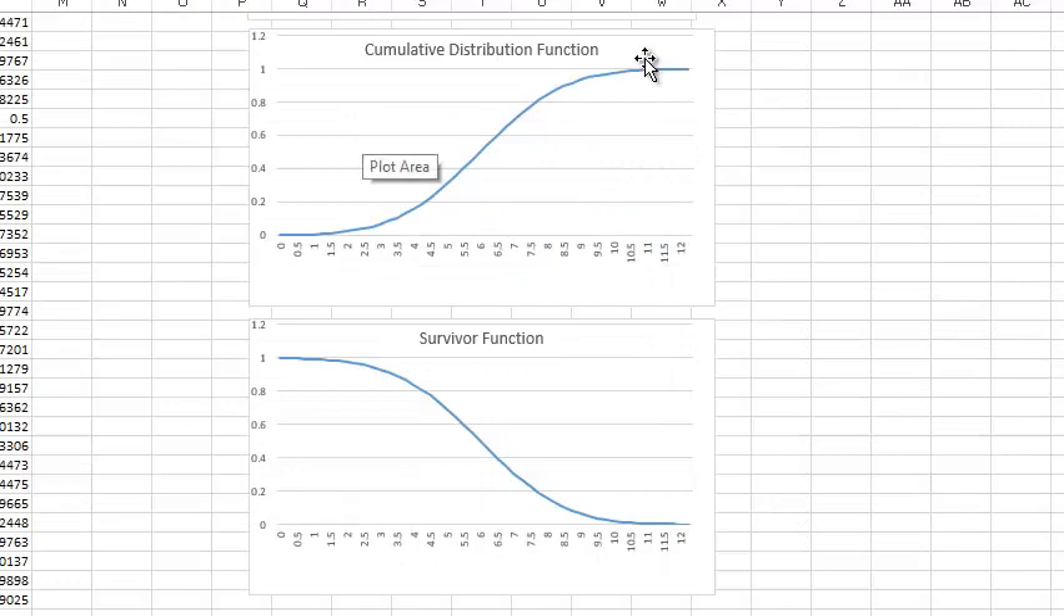Okay, so let me zoom in. Stand by a second. So now we can clearly see the survivor function. It's a mirror image of the CDF, so the complement is this just flipped around graph.